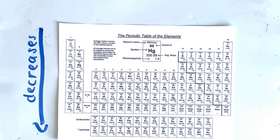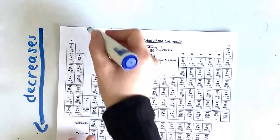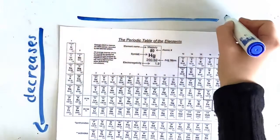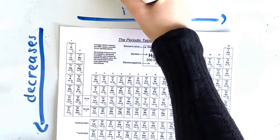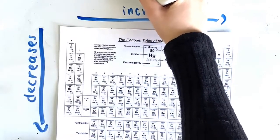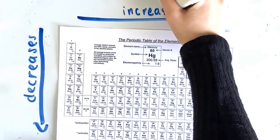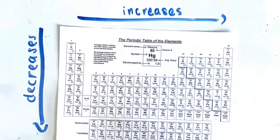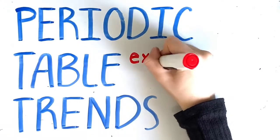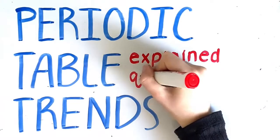Electron affinity increases across a period. This is because there is a smaller distance between the nucleus and the electrons, meaning less shielding, which causes more attraction between the nucleus and the electron, giving a greater electron affinity. This means that more energy is released when the electron is added to the atom. And those are all the periodic table trends explained.